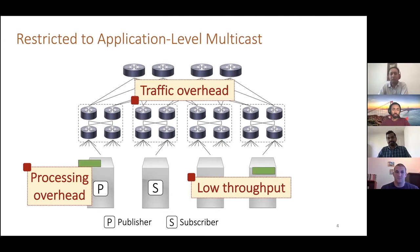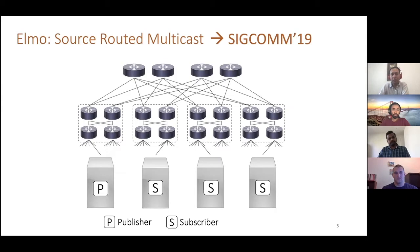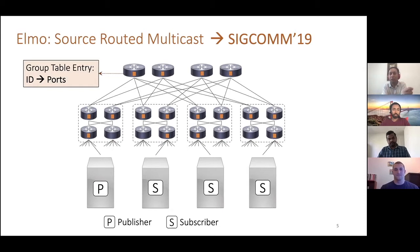We asked how we could enable native multicast that scales beyond today's state limitations while still running at line rate. We looked into source-based multicast and implemented a scheme called ELMO, which appeared at SIGCOMM last year. Rather than maintaining group state inside switches — where a rule table entry matches on a group ID and selects output ports — we move this multicast policy inside the packet itself, encoding it as a list of switch IDs and port bitmaps.